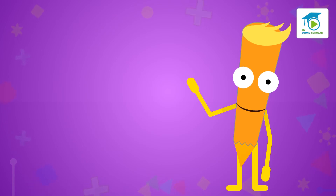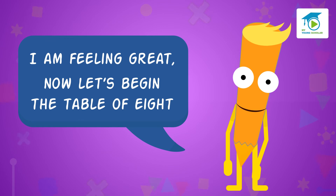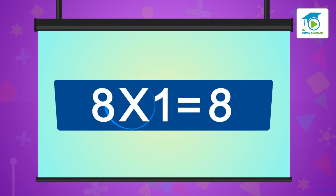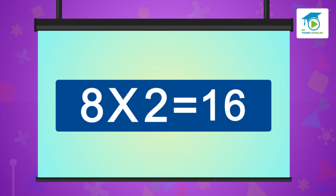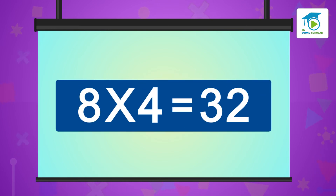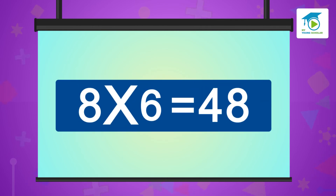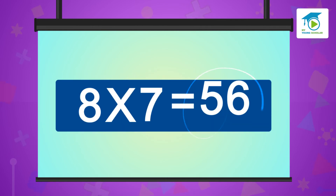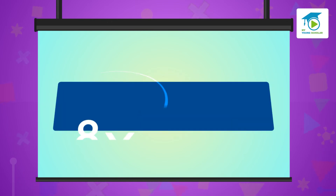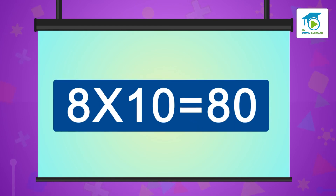That was outstanding. I am feeling great. Now let's begin with the table of eight. Eight ones are eight, eight twos are 16, eight threes are 24, eight fours are 32, eight fives are 40, eight sixes are 48, eight sevens are 56, eight eights are 64, eight nines are 72, eight tens are 80.